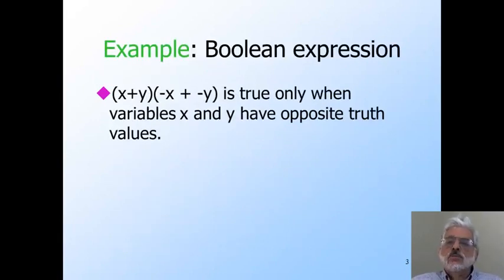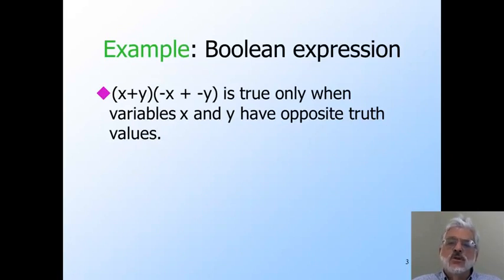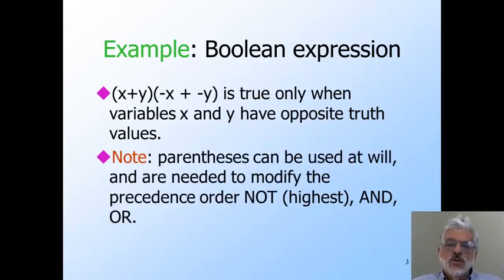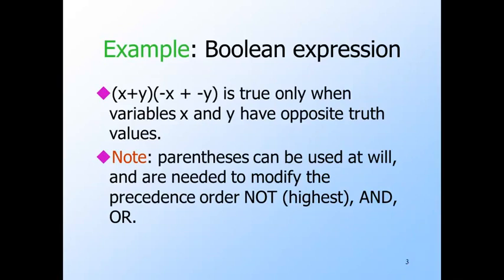Here is an example of a Boolean expression. X OR y is true when at least one of x and y is true. And NOT x OR NOT y is true when at least one of x and y is false. So the whole expression is true when at least one is true and at least one is false — meaning exactly one is true and exactly one is false. Remember to use parentheses to alter the order in which operators are applied. The order of precedence is NOT first, then AND, then OR. Thus the parentheses in the example are needed to make sure the ORs are applied before the ANDs.